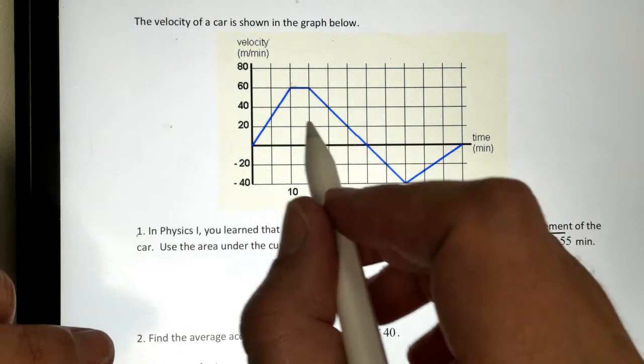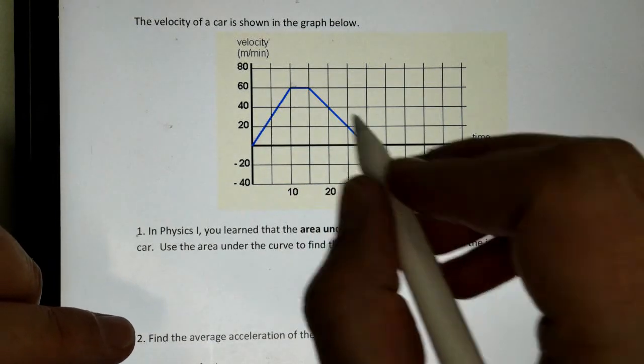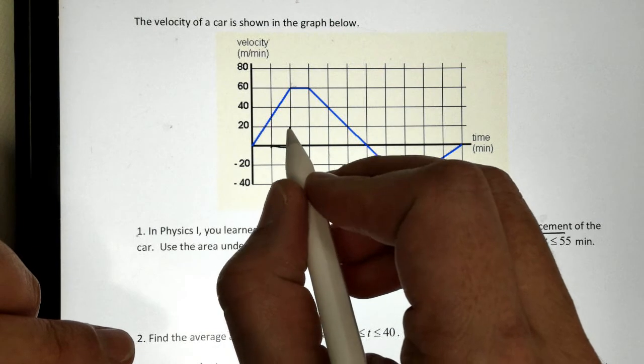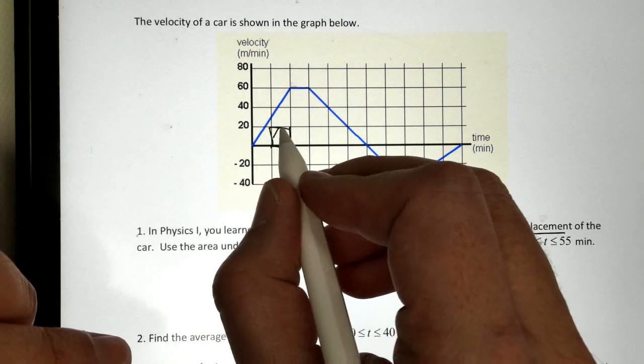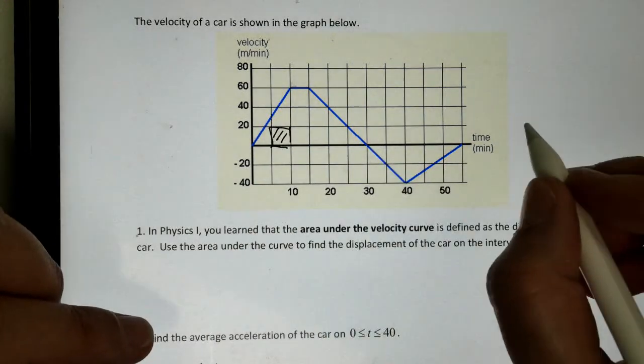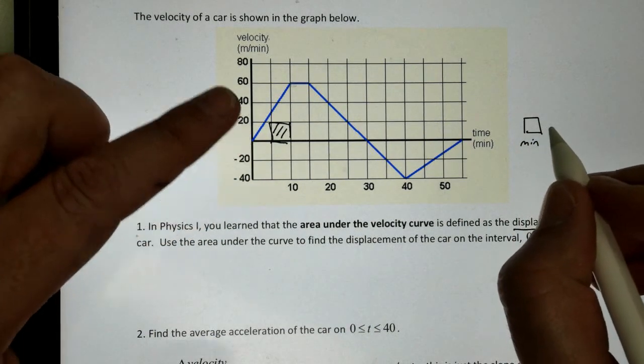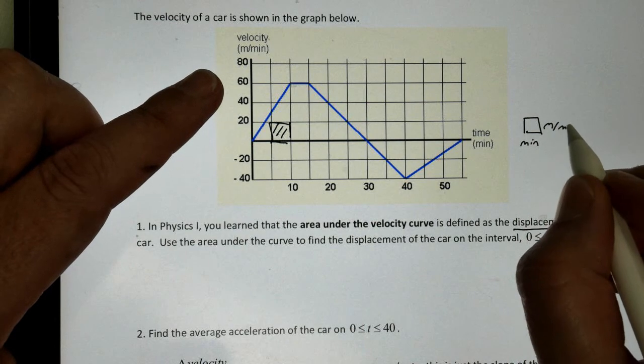We know it's going to give us displacement because I can look at the units. If I think of the area like little tiny rectangles, the area of this box has a width of time in minutes, but has a height in meters per minute.